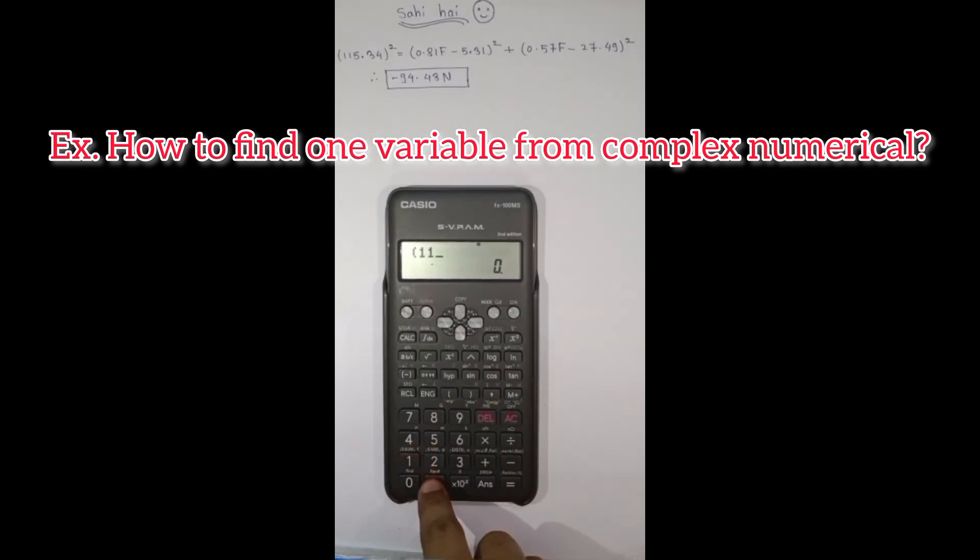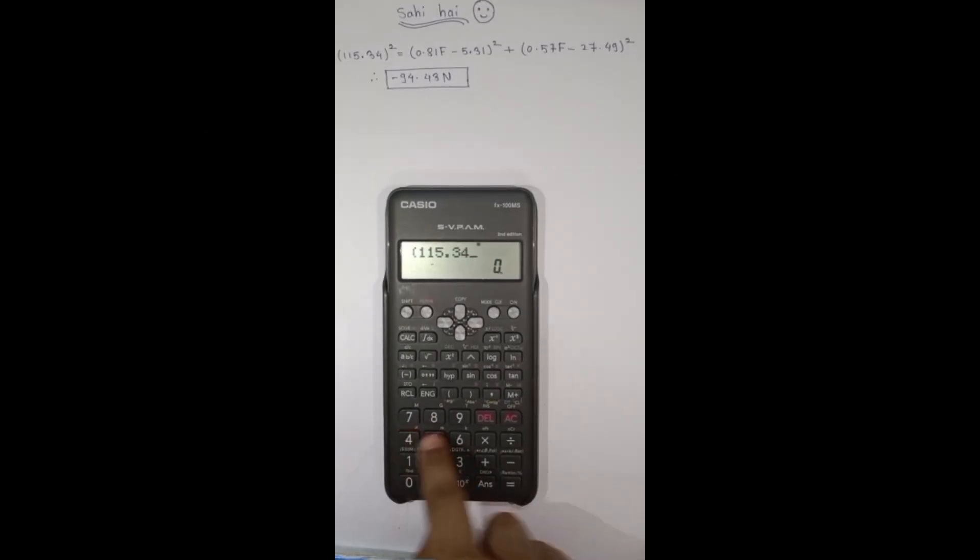Example number 1: 15.34 bracket square alpha equals to in bracket 0.81 alpha a minus 5.31 bracket square plus in bracket 0.57 alpha a minus 27.49 bracket square, shift solve, shift solve.